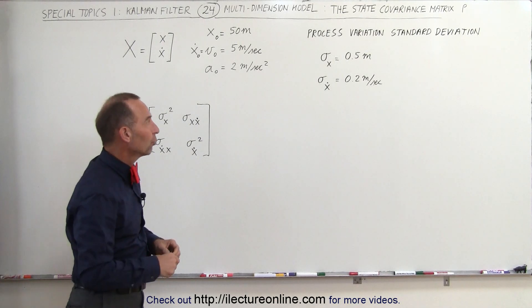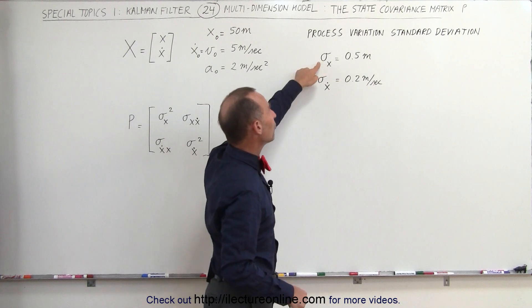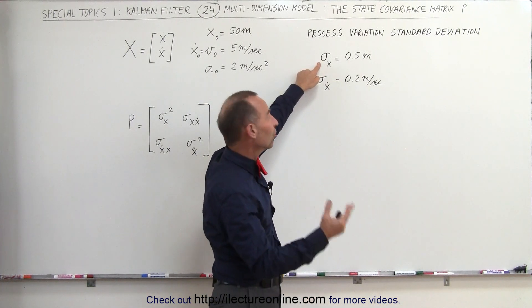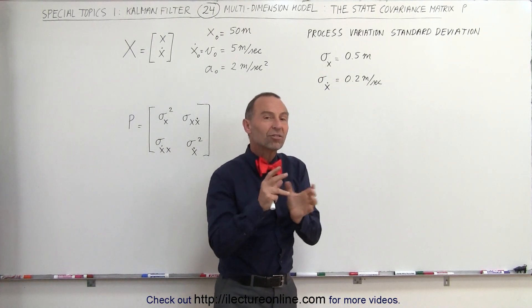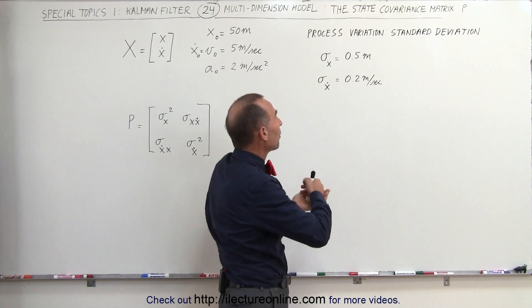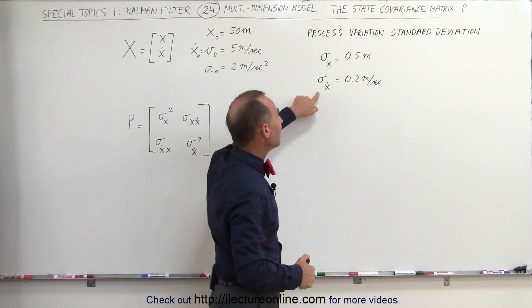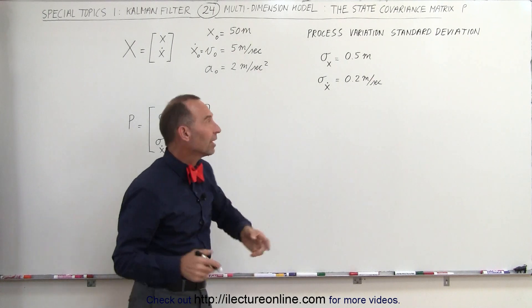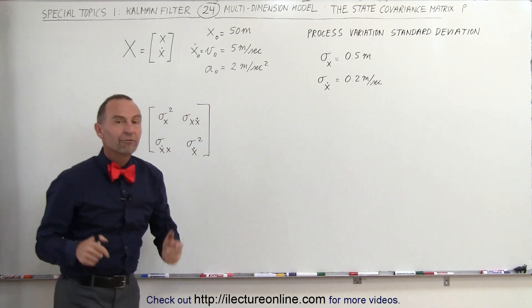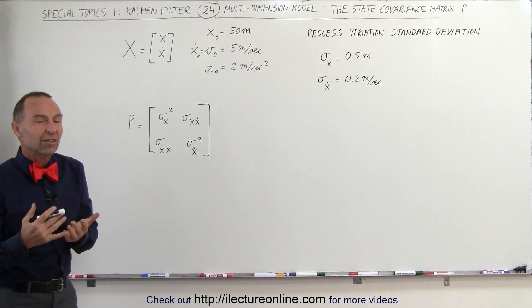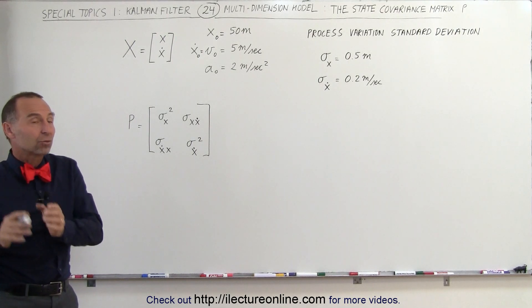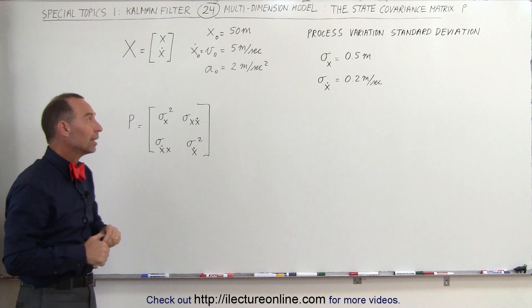Through some analysis we've shown that the standard deviation of the variation in the position caused by the processing of the data - so this is the process variation - is 0.5 meters and the variation in the velocity is 0.2 meters per second. These are variations caused by the process, not by making data measurements.